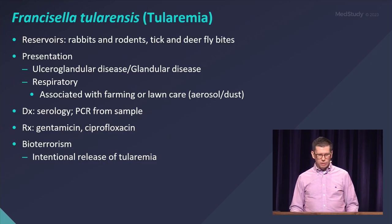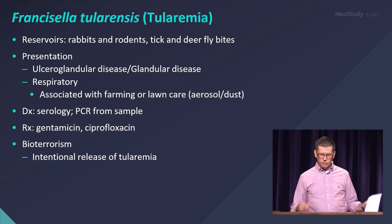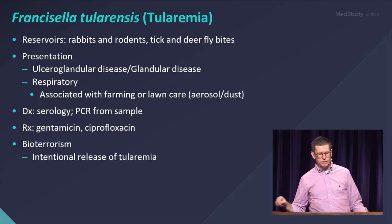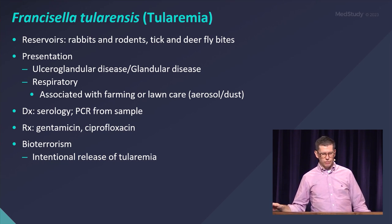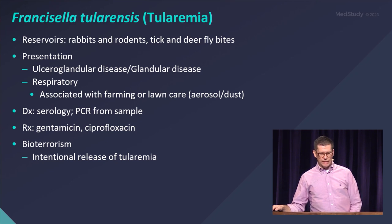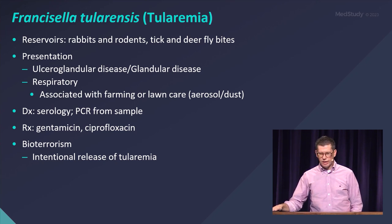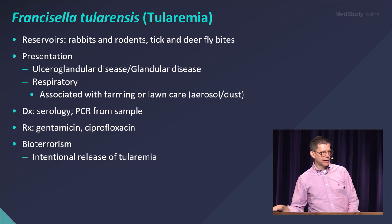The other epi clues for tularemia usually involve rabbits or rodents. You're going to see ulcer-glandular disease, and you can get respiratory manifestations if you inhale a significant amount at one time, although that's less common.